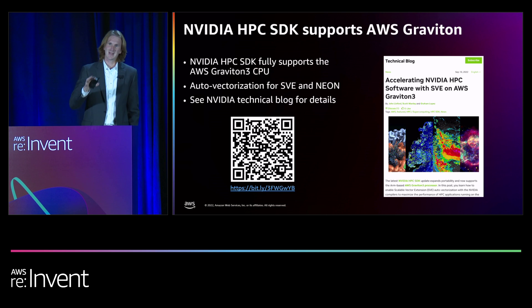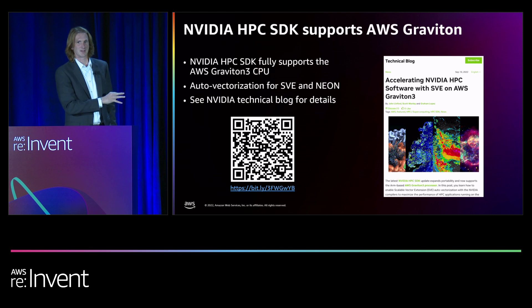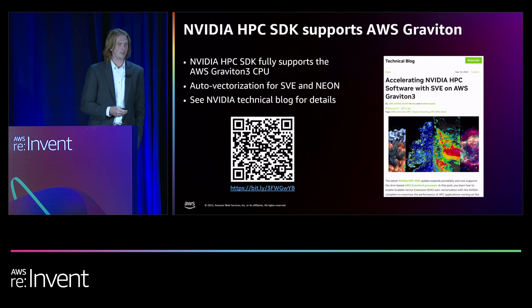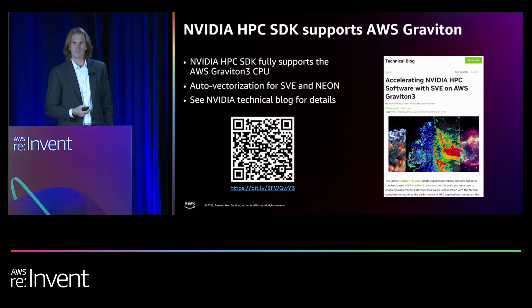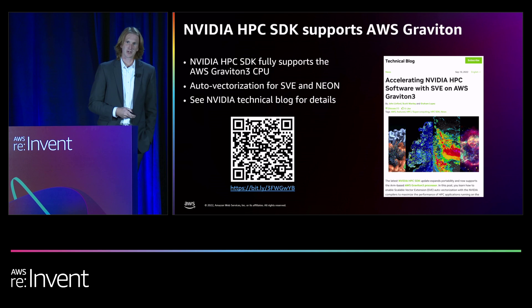That same vector ISA is found in the Graviton 3, which means Graviton 3 is a really beefy CPU with excellent price performance and excellent single-thread performance. You can really optimize for that platform using the NVIDIA compiler, which especially targets Graviton 3.